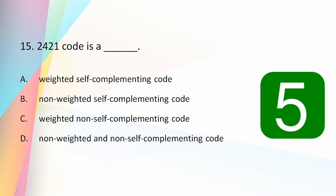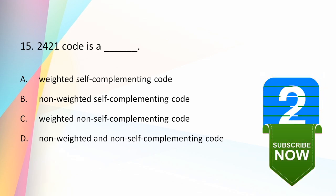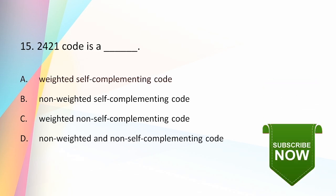2421 code is: a weighted self-complementing code, non-weighted self-complementing code, weighted non-self-complementing code, or non-weighted and non-self-complementing code? The answer is weighted self-complementing code, because this code has position weights and the sum of weights is 2+4+2+1 = 9. Other weighted self-complementing codes are 3321, 5211, and 4311.